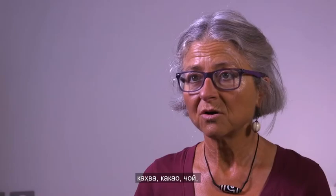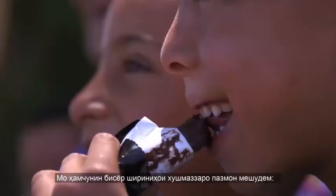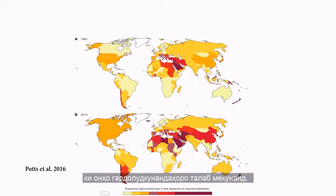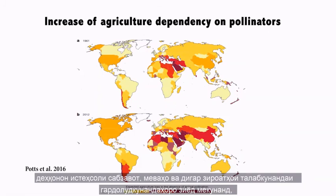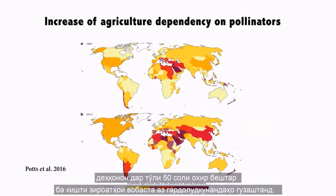If we would lose all these crops, we would suffer from malnutrition. And without wild pollinators, no chocolate anymore. Globally, the agricultural dependency on pollinators increases for many decades, because we eat more and more fruits, vegetable spices, and so on. In particular, the dry regions shift to pollinator-dependent crops because they need less water but give good income.